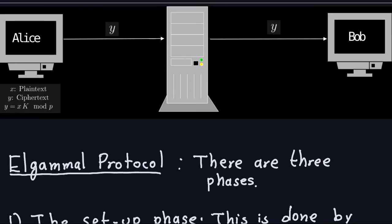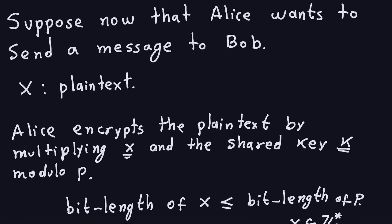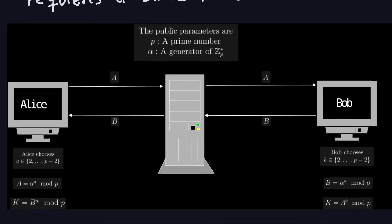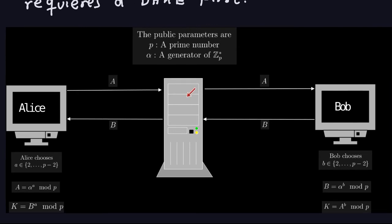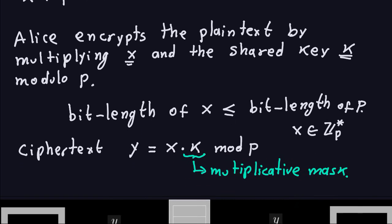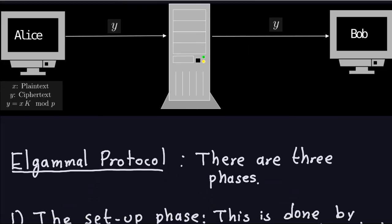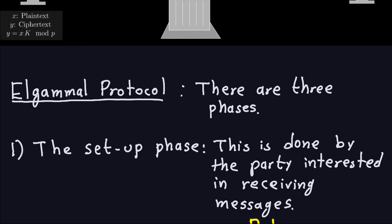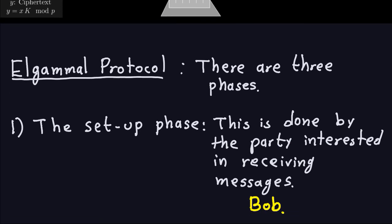This can be improved a little with what we'll call the ElGamal protocol, which distinguishes three phases. The first phase is the setup phase, done by Bob — the party interested in receiving messages. The second phase is the encryption phase, done by Alice — the entity interested in sending secret messages. The third is the decryption phase, done by Bob, the person who receives the messages.